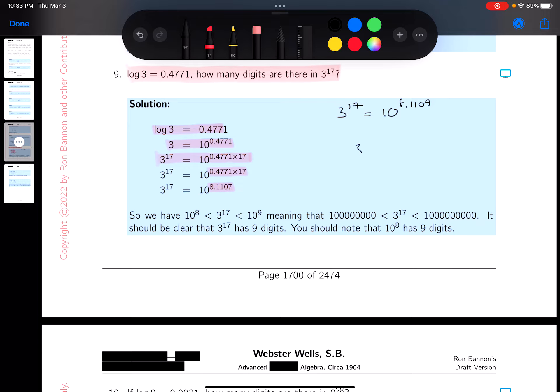So what is it really telling me? That 3 to the 17th is between 10 to the 9th and 10 to the 8th. And I hope you realize that we have a certain number of digits over here. And I'm not going to count the zeros, by the way.